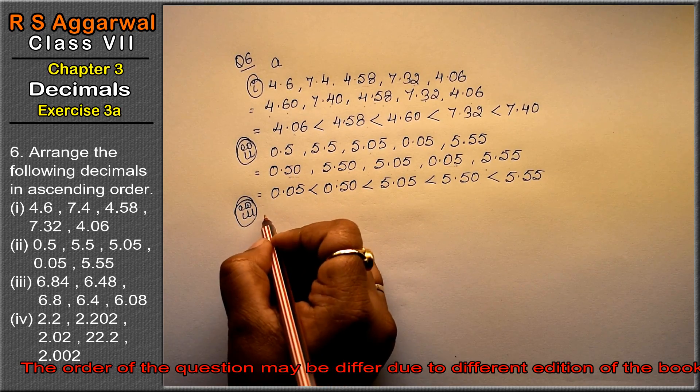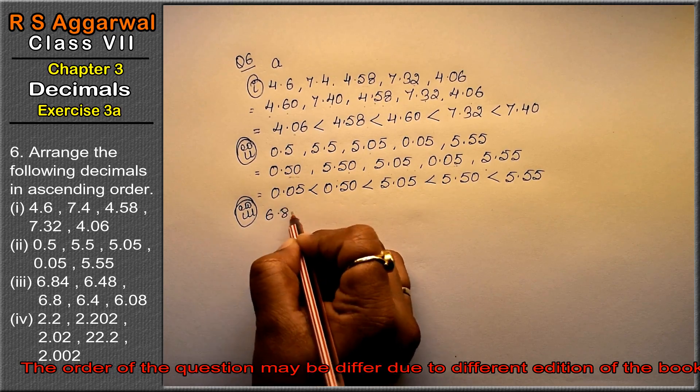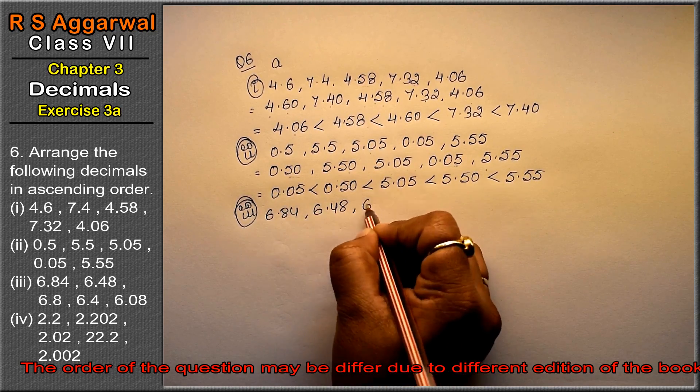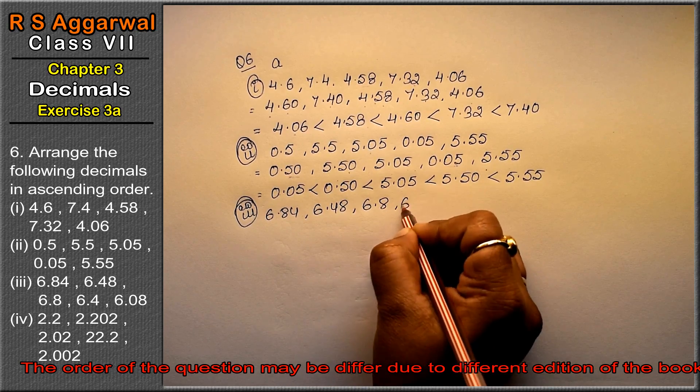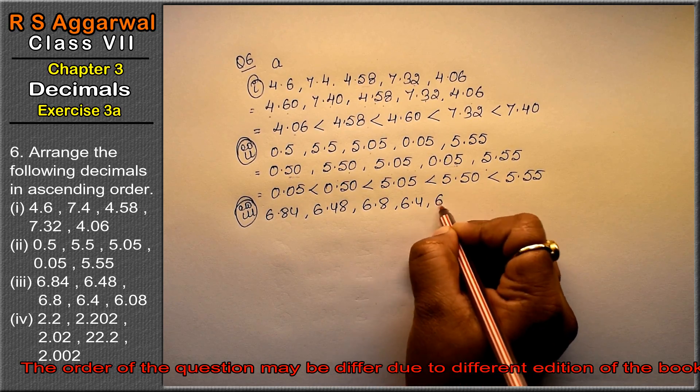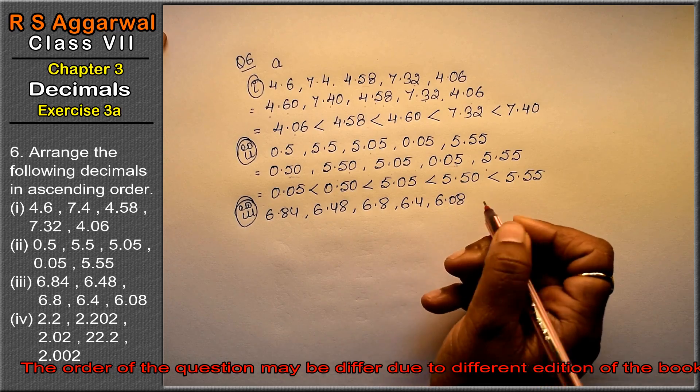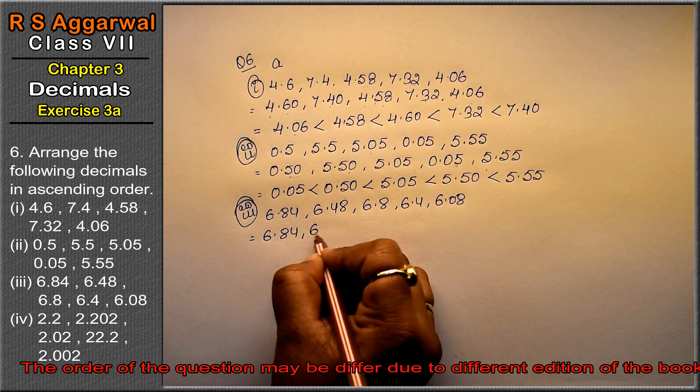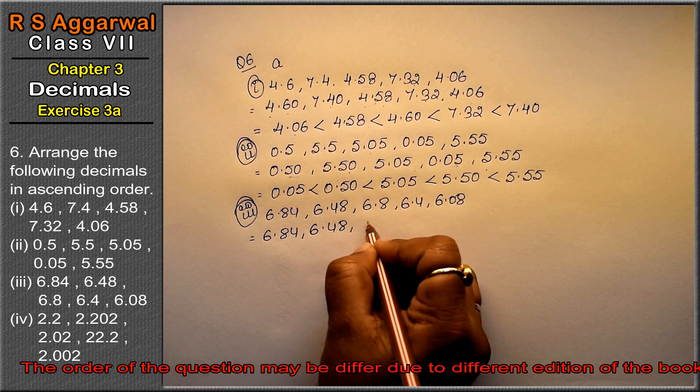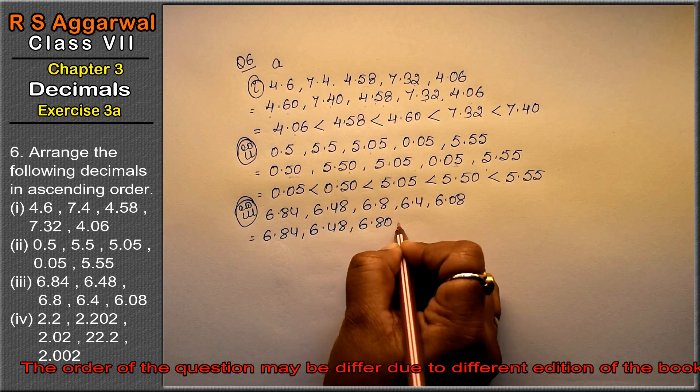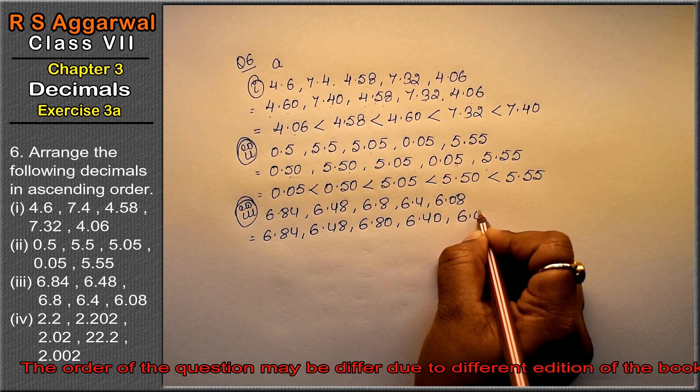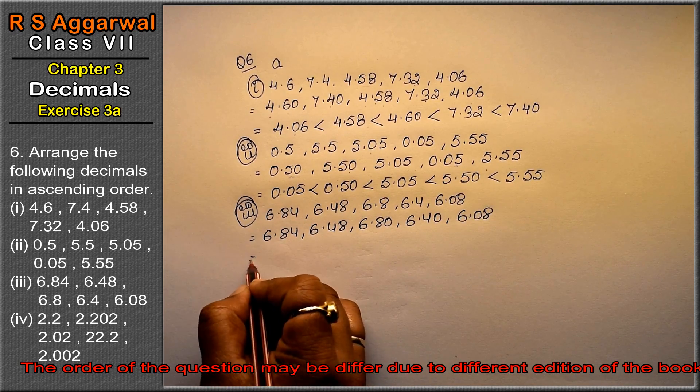Third part is 6.84, 6.48, 6.8, 6.4, 6.08. In like fraction: 6.84, 6.48, 6.80, 6.40, and 6.08.